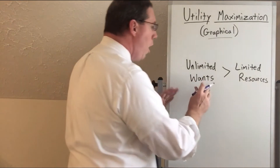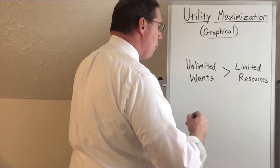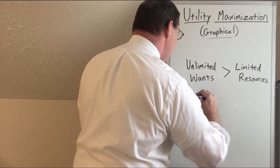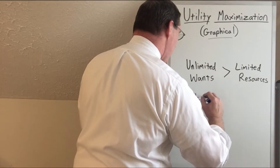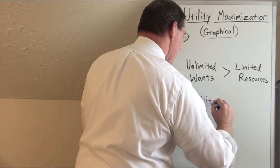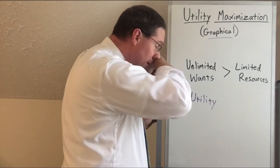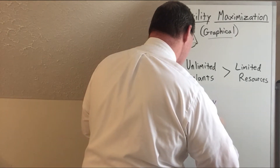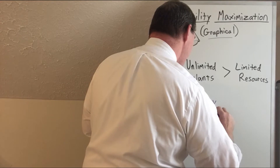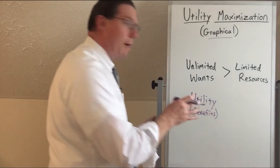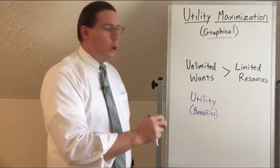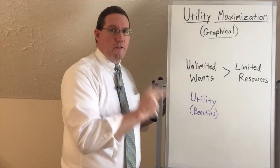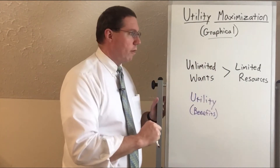Our unlimited wants fulfill our satisfaction, so this side is the utility side — or the benefit. When we get benefits from making a decision, we're trying to satisfy our unlimited wants.